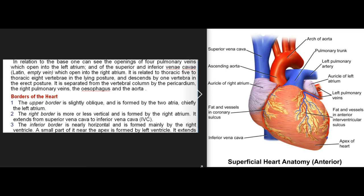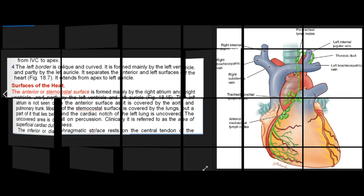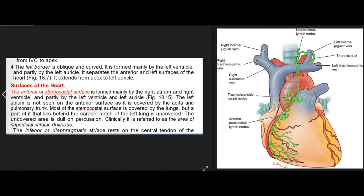Borders of the heart: The upper border is slightly oblique, formed by the two atria, chiefly the left atrium. The right border is more or less vertical, formed by the right atrium, extending from the superior vena cava to the inferior vena cava. The inferior border is nearly horizontal, formed mainly by the right ventricle, with a small part near the apex formed by the left ventricle; it extends from the IVC to the apex. The left border is oblique and curved, formed mainly by the left ventricle and partly by the left auricle; it extends from the apex to the left auricle.